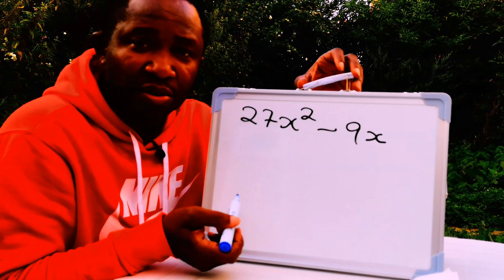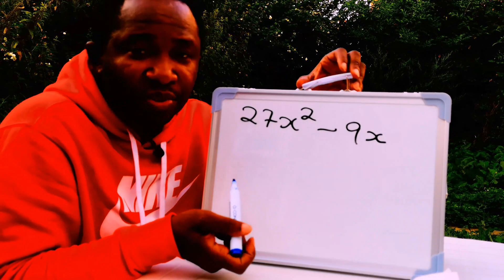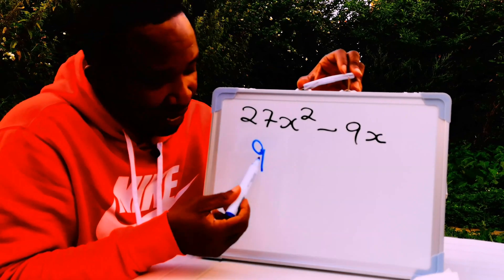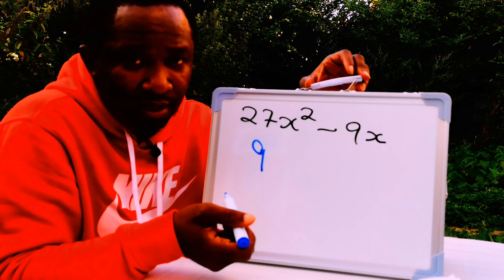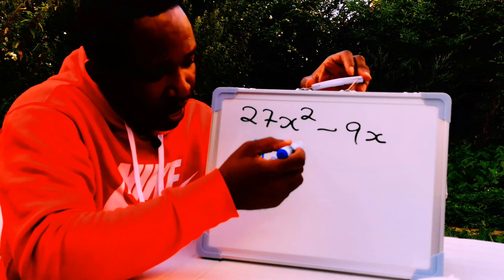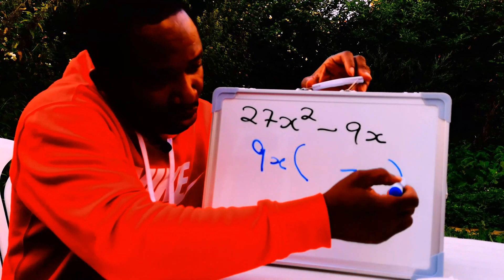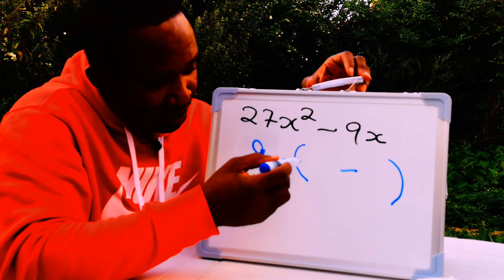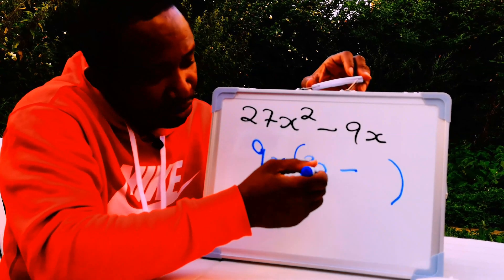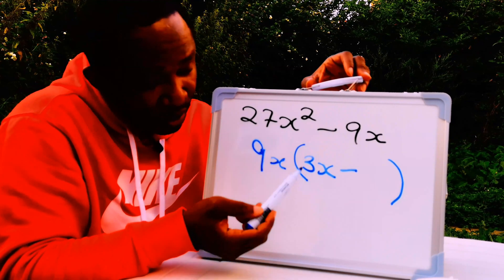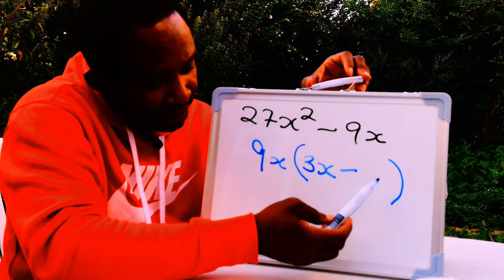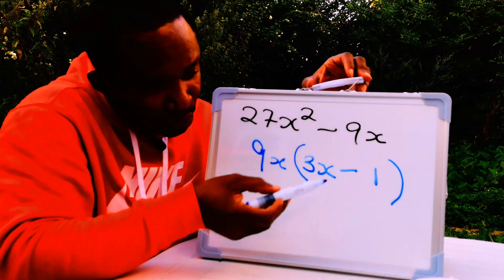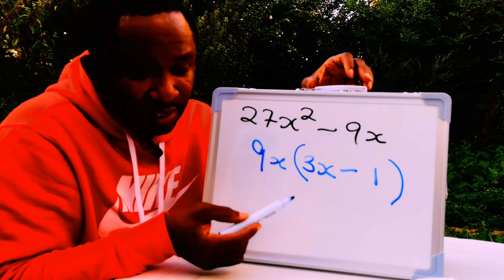Here we have 27x squared minus 9x. What is common on both sides? 9 is common because 9 can go into 27 and 9 can go into 9. The common factor is also x. Opening the bracket: 9x times 3x gives 27x squared, and 9x times 1 gives 9x. Hence 9x is the common factor, giving 9x(3x - 1).